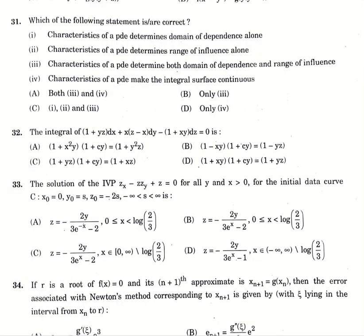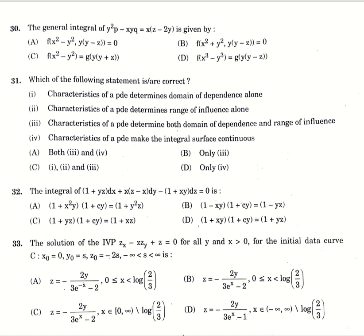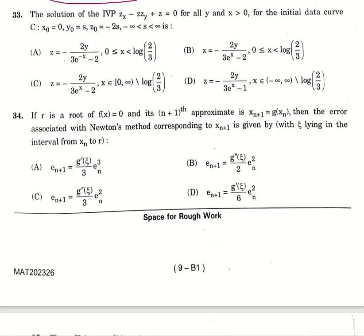Thirtieth question, general integral of Y square P minus X, Y, Q equals X into Z minus 2Y is given by option number B. Which of the following statements are correct? Option number D, it makes the integral surface continuous. Thirty-second, the integral of given PDE is option number C. Thirty-three, the solution of initial value problem of the given PDE for initial data curve is option number D. Next, if R is the root of F of X equals 0 and N plus 1 approximate is XN plus 1 equals G XN, error associated with Newton's method corresponding to XN plus 1 is given by option number B.